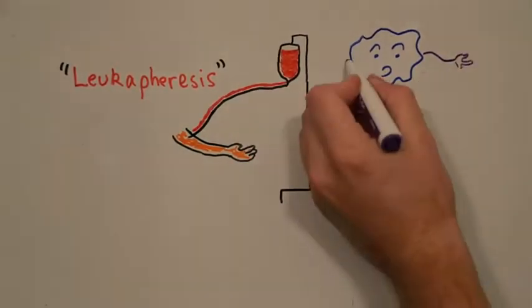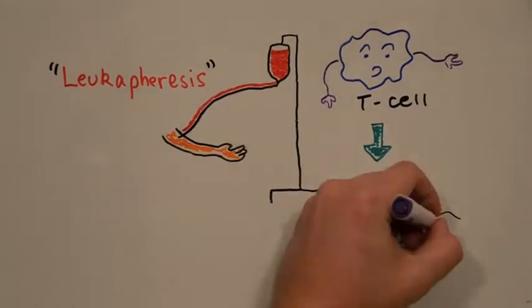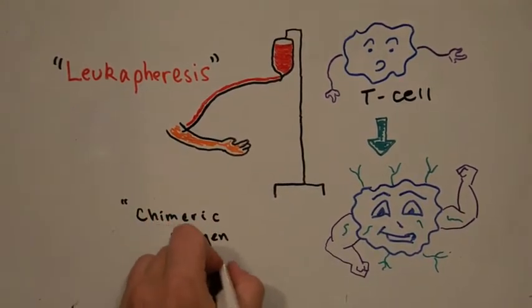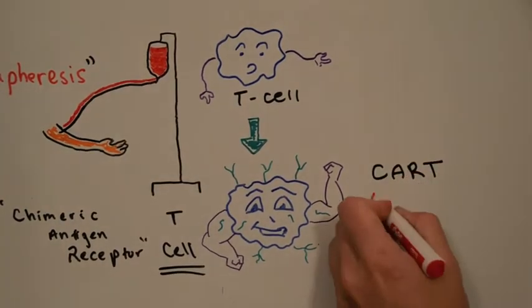The goal is to genetically engineer these T cells into CAR-T cells, capable of identifying and destroying cancer cells. CAR is short for Chimeric Antigen Receptor, referring to the special new surface proteins that target cancer.